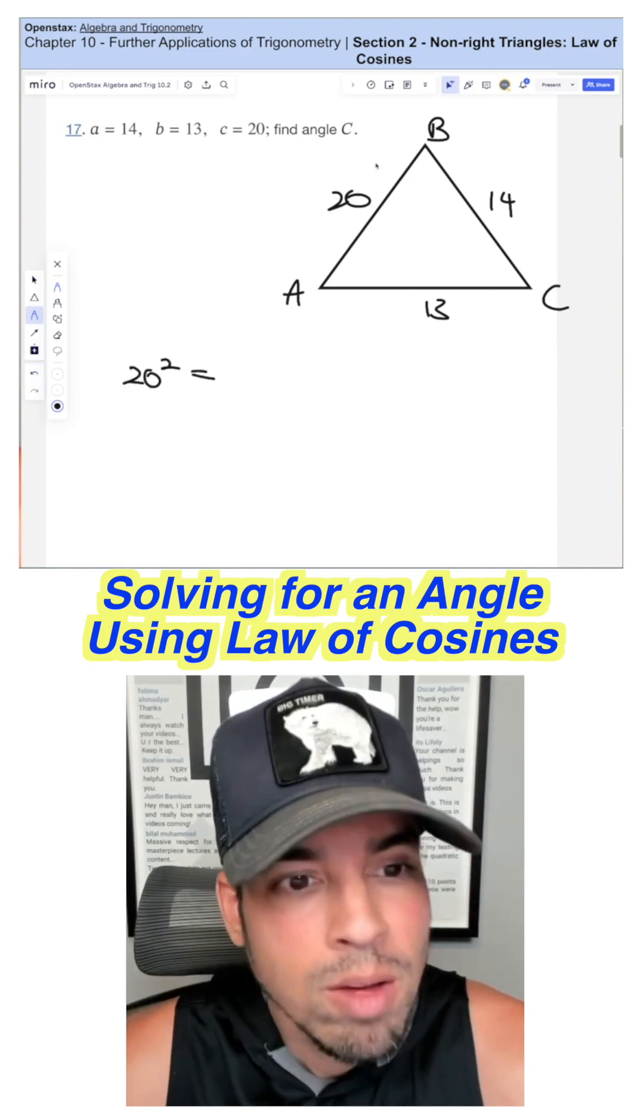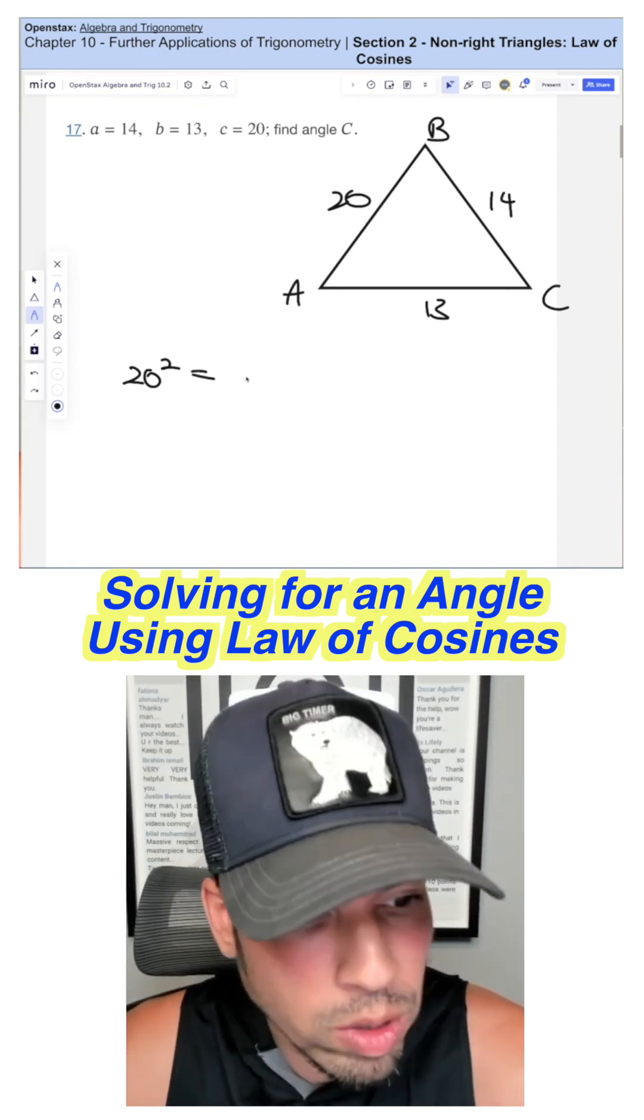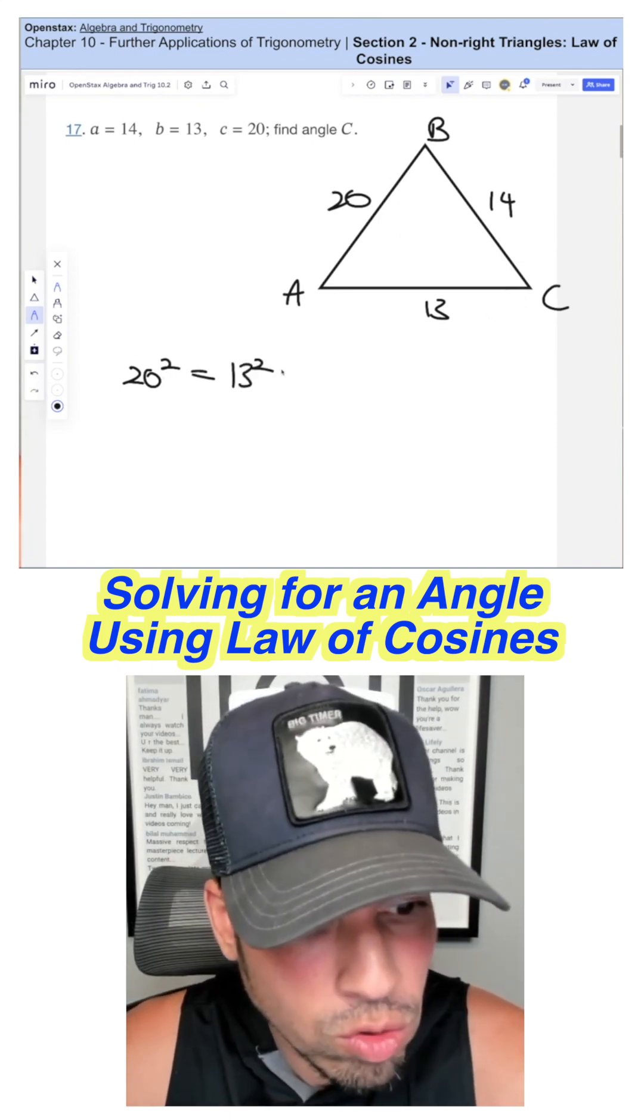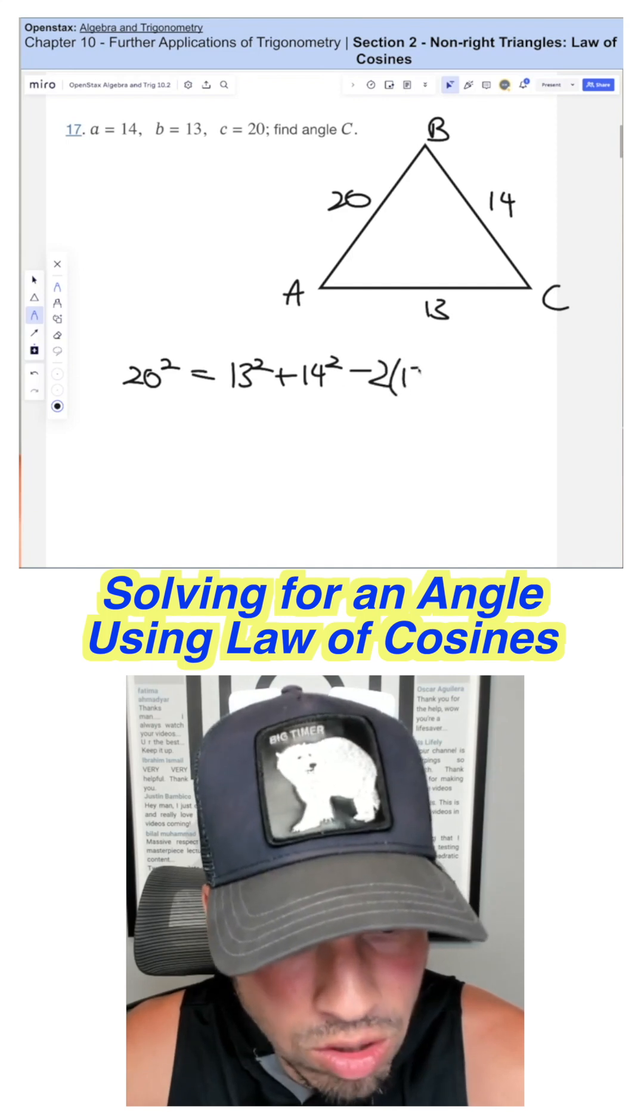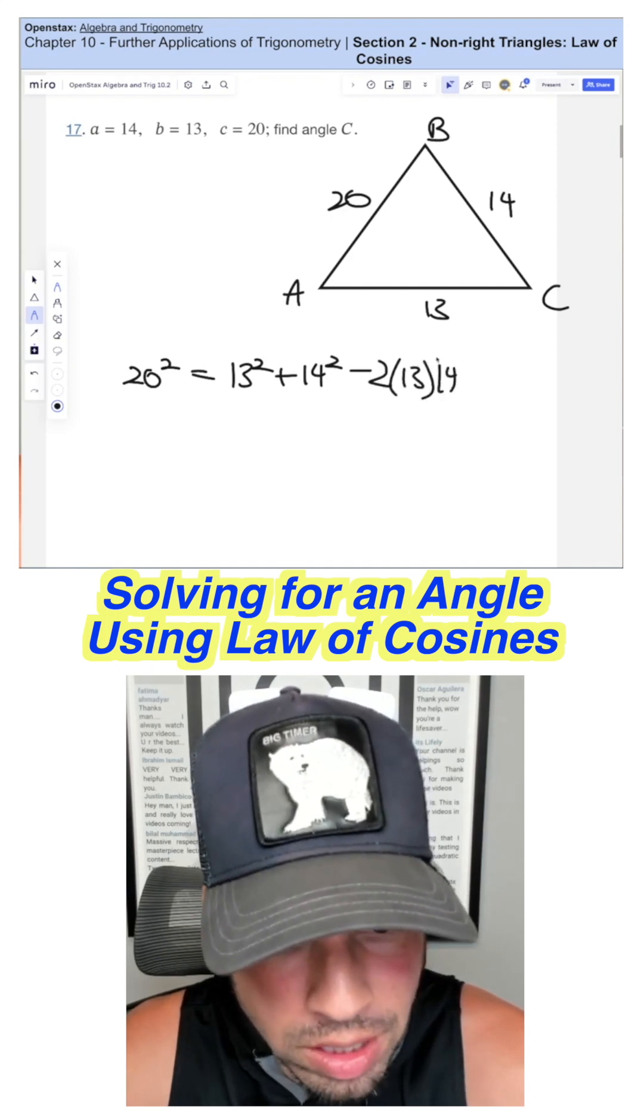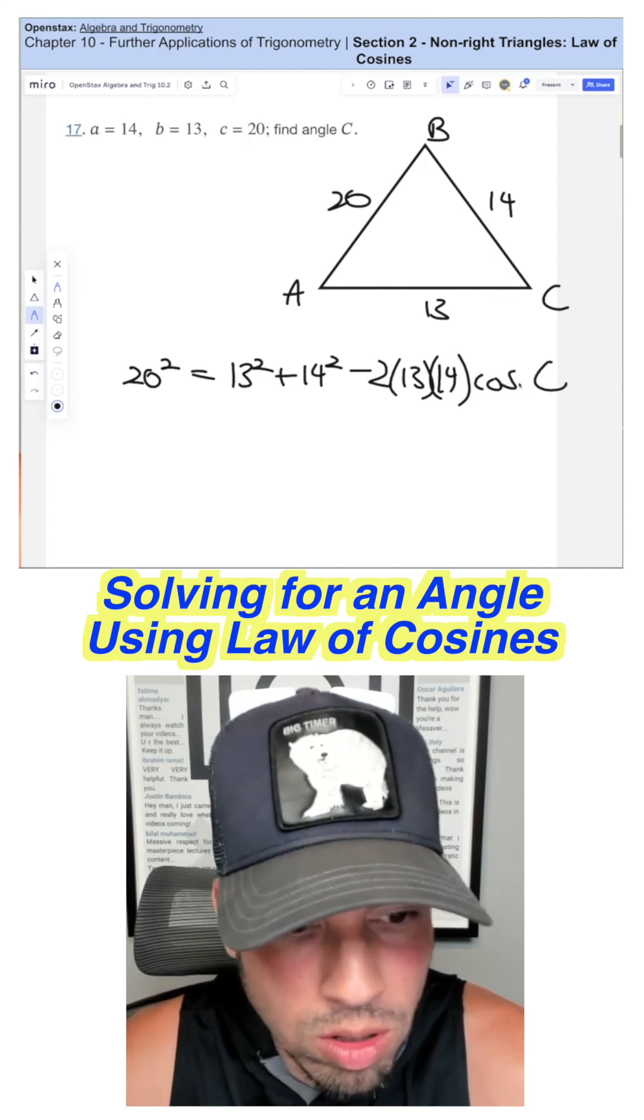So it's 20 squared, because the side and the angle have to kind of be on opposite sides of the equation. 20 squared equals the other side squared plus the other side squared minus two times these two sides, 13 and 14, and then times cosine of this opposite angle, which we don't know, but we're going to call it C.